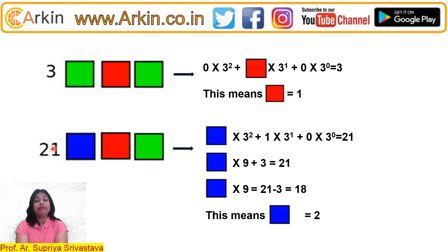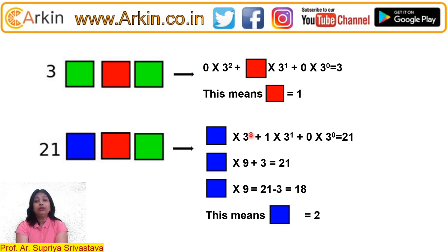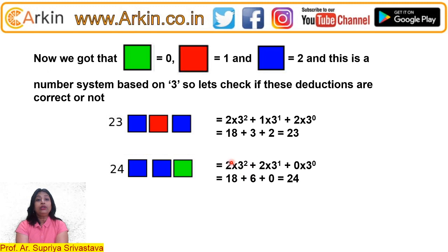Now we know another value is equal to 21, and we need to find blue. We know red equals 1 and green equals 0. So we put in: blue × 3² + 1 × 3¹ + 0 = 21. That gives blue × 9 = 21 − 3 = 18, so blue equals 2. We now know green = 0, red = 1, and blue = 2.